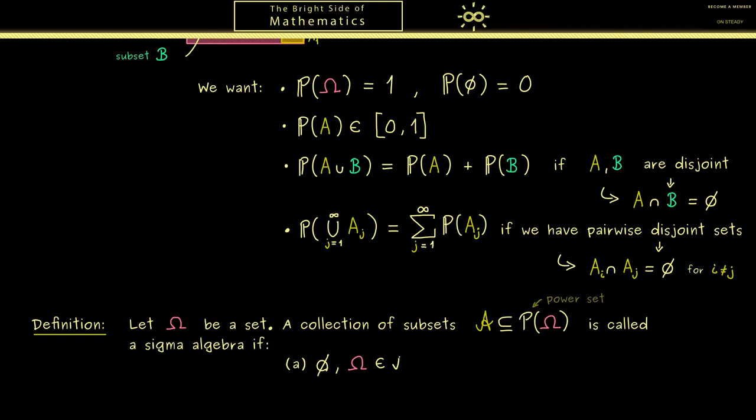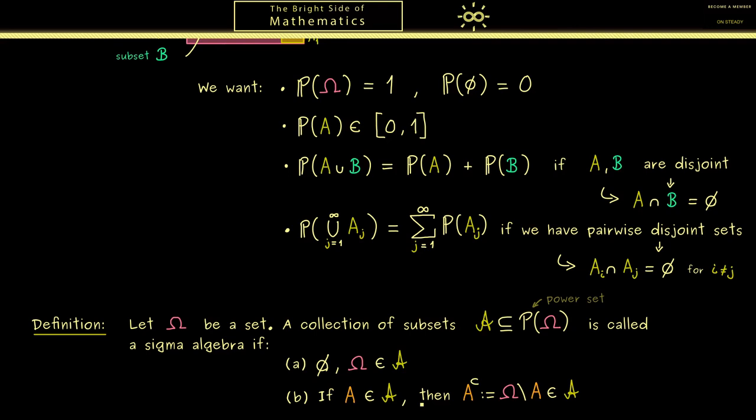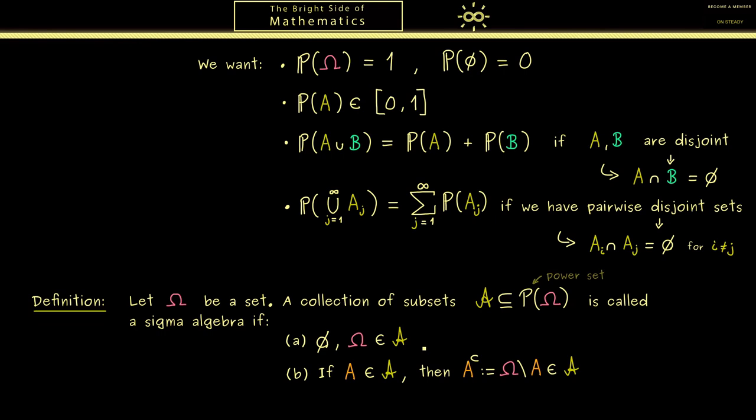Then the next property we need is: if we take any subset A that lies in our curved A, then the complement should also be in curved A. The complement in general is defined as Omega the whole space without the set A, and I always denote it with this upper index C. Please note this makes sense because if we have the probability for one event A, then we should also be able to calculate the probability of not A. Okay, and then the third property is not so hard to understand because you already know we want this for the probability measure. So we just take countably many sets from A, and then the whole union should also be an element of A.